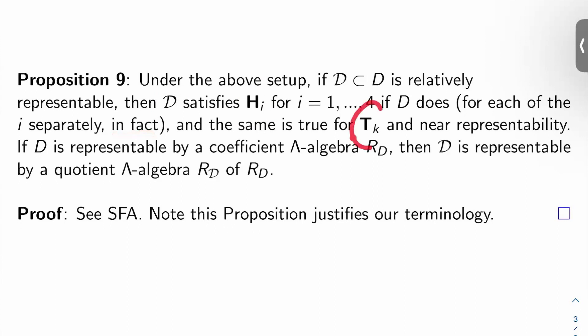And the same is true for T sub K, the tangent space hypothesis, and near representability. So if D is representable by a coefficient lambda algebra, let's say R sub D, and script D is representable by a quotient lambda algebra of that, R sub script D. And so this is one of the main results in Schlesinger's paper. And this proposition obviously completely justifies our terminology.